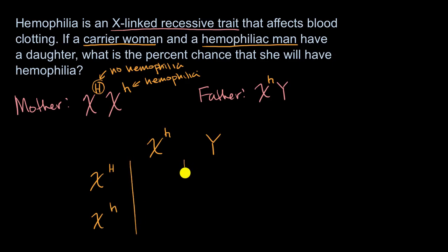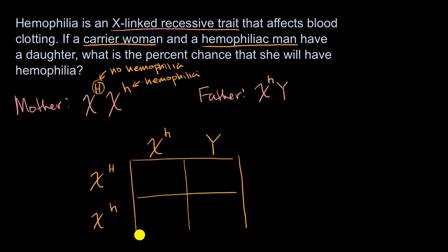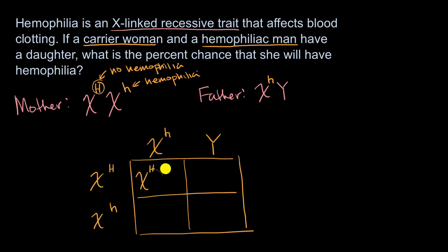Now I'll draw my Punnett square. The top left scenario is: I get the X chromosome from the mother that does not have the hemophilia allele, and I get the X chromosome from the father that does have the hemophilia allele. The next scenario is the X chromosome from the mother with the hemophilia allele and the X chromosome from the father with the hemophilia allele.